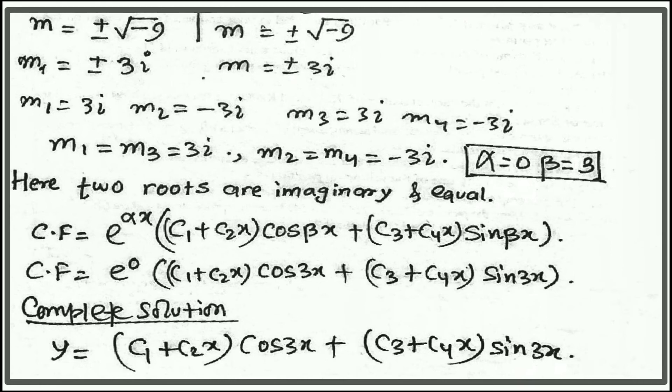When the roots are equal and imaginary, the complementary function is: e^(αx)((c₁ plus c₂x)cos(βx) plus (c₃ plus c₄x)sin(βx)). Which simplifies to: (c₁ plus c₂x)cos(3x) plus (c₃ plus c₄x)sin(3x).